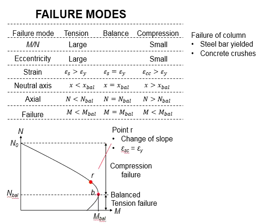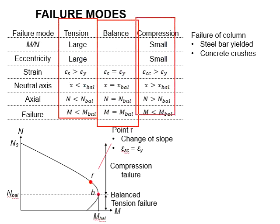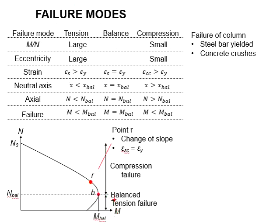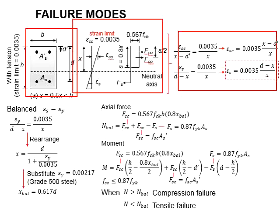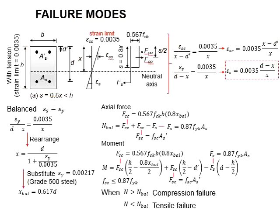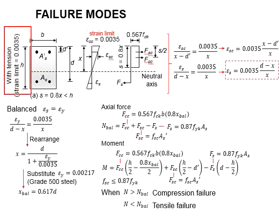In our previous video, we mentioned that columns can fail in tension or in compression. There is a state of balance where tensile and compressive failure happens at the same time, which occurs at the positions of N-balance and M-balance. In this slide, we are going to demonstrate how we obtain N-balance based on the first principles of columns. The stress-strength relationship of the column sections, as well as the formulas to determine the strength in the steels, has already been discussed in the previous video.